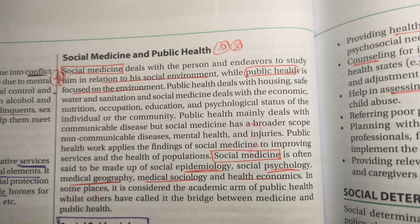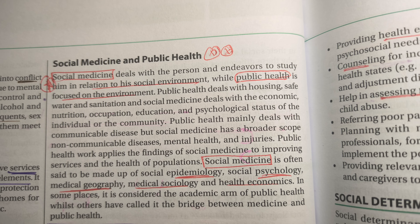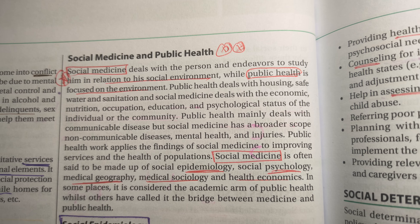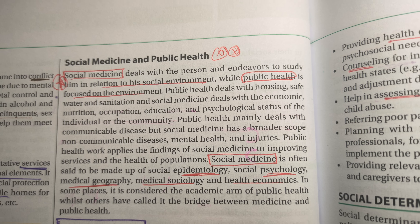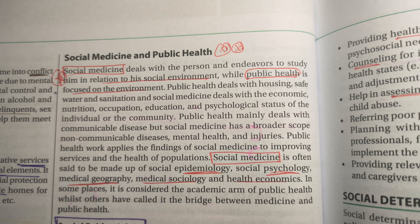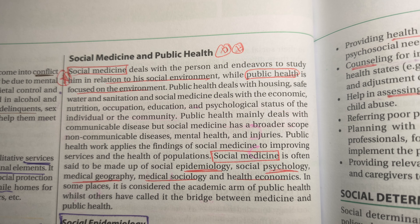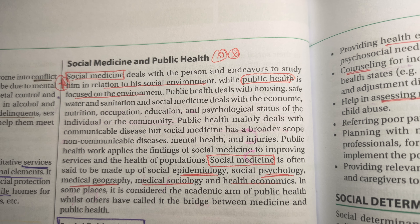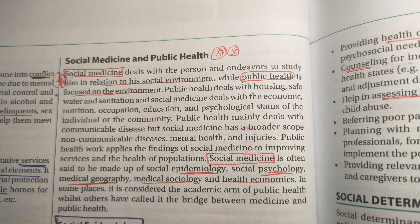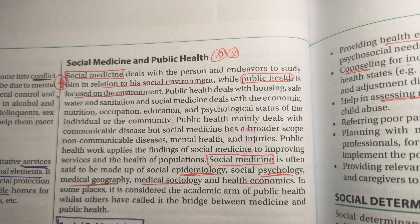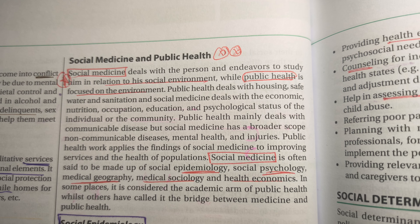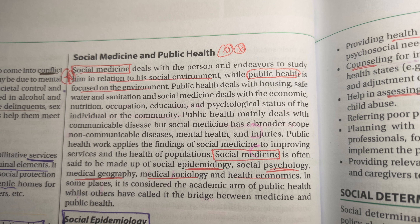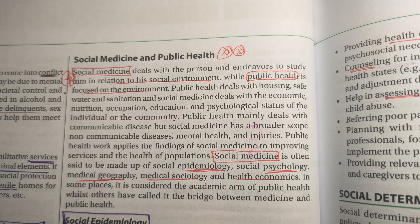Social medicine deals with the person and endeavours to study him in relation to his social environment, while public health is focused on the environment. Public health deals with housing, safe water and sanitation, and social medicine deals with the economic,